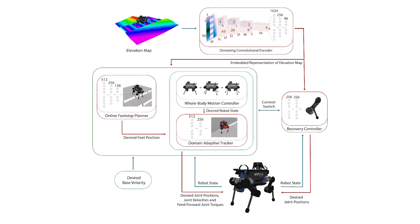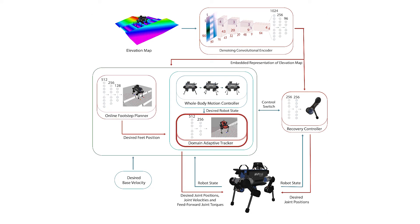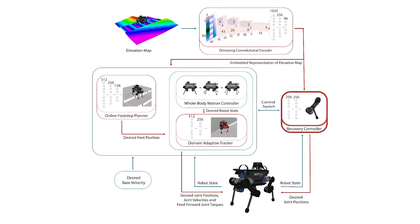As part of our framework, we introduce three RL policies: a first step planning policy, which given terrain and robot state information generates desired foot positions and forwards it to a whole body motion controller; a domain adaptive tracking policy, which generates corrective feed forward torques in order to aid whole body motion tracking; and finally, an emergency recovery controller, which generates low level joint position commands for quick responses to external perturbations.